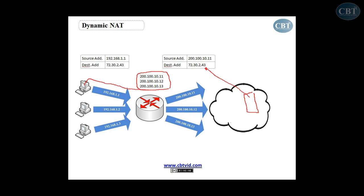You can have more or less, so you can define a pool here. This pool will be used by the router. When a computer sends a packet out and it comes to the router, the router looks at the pool. It takes one address from the pool and assigns it to that computer — to the packet that comes from the computer. So in this case, this packet will be converted.